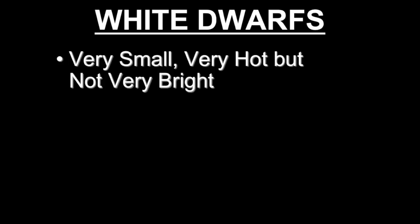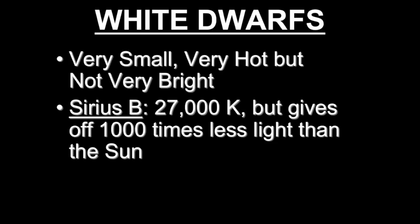Then there's white dwarfs. These are stars that are very small, extremely hot, but not very bright. So consider Sirius B. This is a star that has 27,000 Kelvin for surface temperature, but it's 1,000 times less luminous than the Sun. What this means is that it's very small. It's 100 times smaller than the Sun.